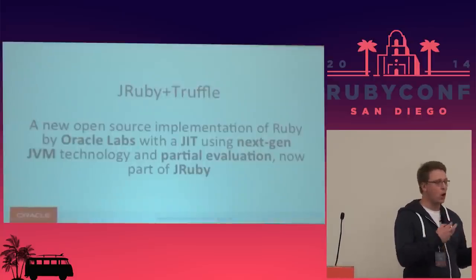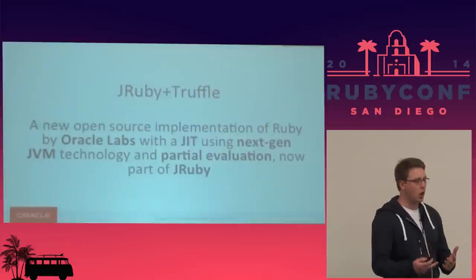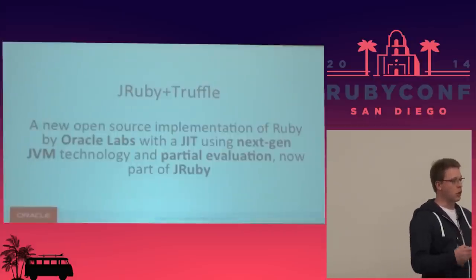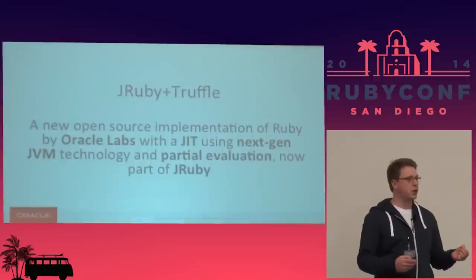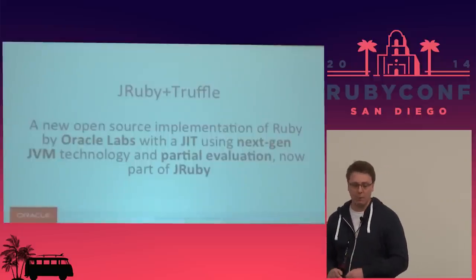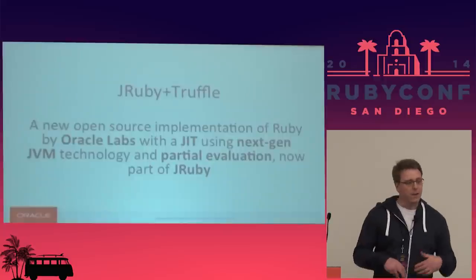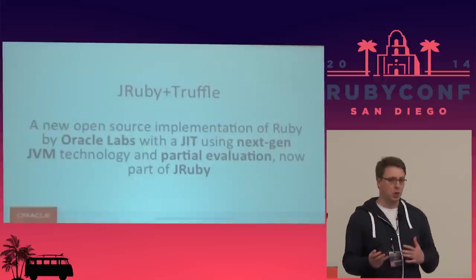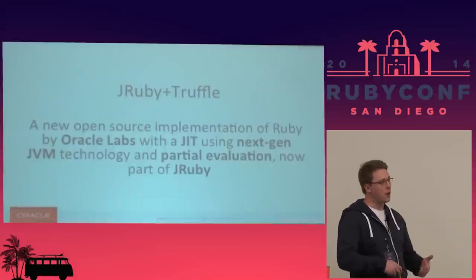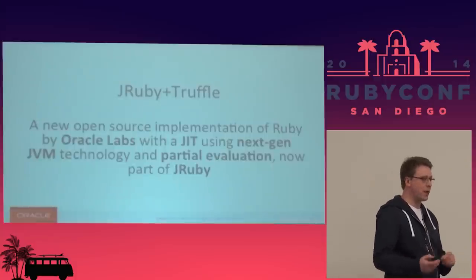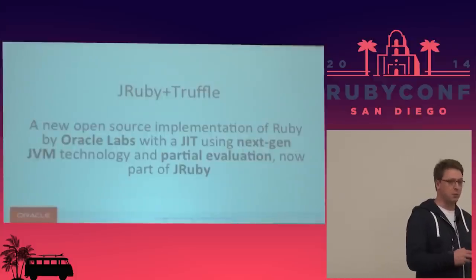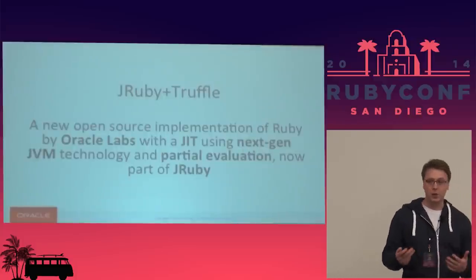The next generation JVM technology we talk about is a new JIT compiler called Graal. We've translated the HotSpot JIT compiler into Java, which means we can use it as a library and control it directly from our Ruby implementation, rather than just parsing it bytecode and hoping it'll do the right thing. You may have heard of method JITs like Rubinius and JRuby use, or tracing JITs like PyPy and Topaz.